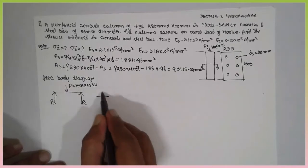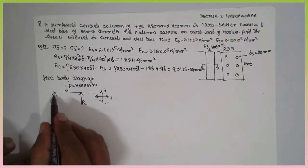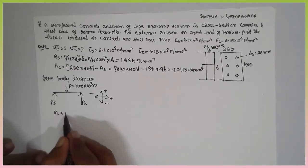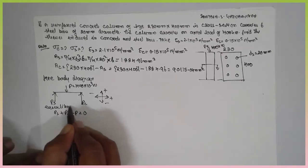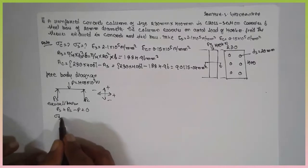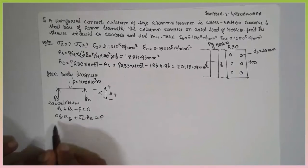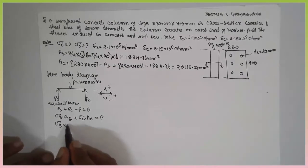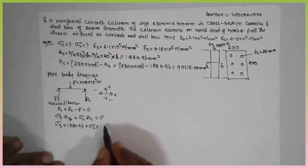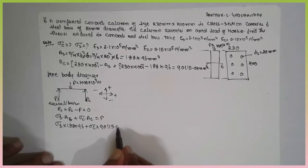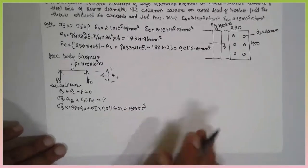Don't consider 6 PS because in case of area we have considered already here. PS plus PC minus P is equal to zero, that means we call it as an equilibrium condition. Now, sigma s into as plus sigma c into ac is equal to P. Sigma s into as 1884.96 plus sigma c into 90115.04 is equal to 400 into 10 raise to 3. Consider this equation 1.